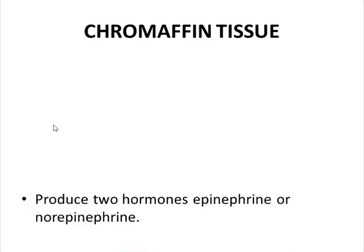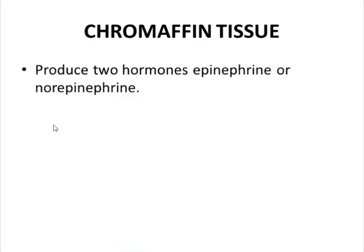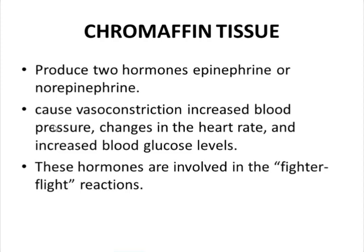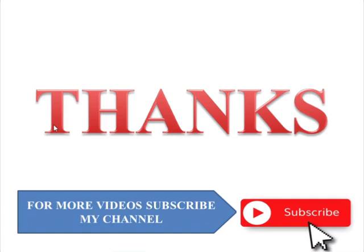Chromaffin tissues produce two hormones: epinephrine and norepinephrine, also known as adrenaline and noradrenaline, produced by the adrenal glands near the kidney. These hormones cause vasoconstriction, increased blood pressure, changes in heart rate, and increased blood glucose levels, and are involved in fight-or-flight reactions. This concludes the topic of vertebrate hormones other than birds and mammals; the next video will discuss hormones of birds.